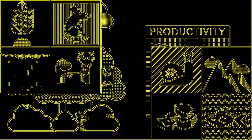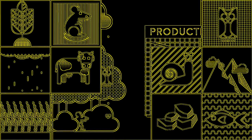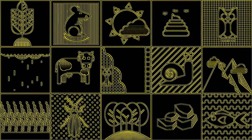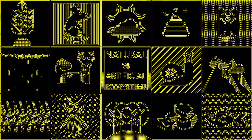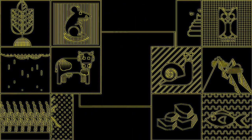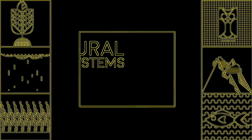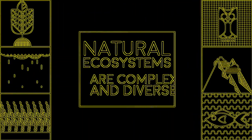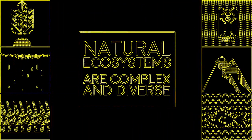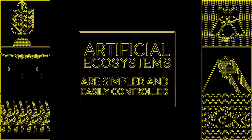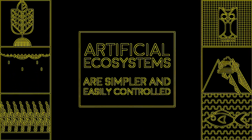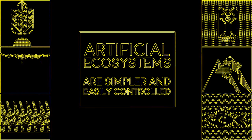From this video you should know some crucial differences between natural and artificial ecosystems. Most importantly, natural ecosystems are much more complex and diverse, whereas artificial ecosystems are much simpler and can be easily controlled for high productivity.